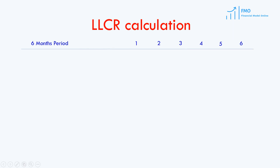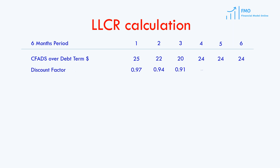Let's review how LLCR is calculated. Our timeline is a 6-month periods timeline, which is a typical timeline for project finance models at the operations stage. The first ingredient in the LLCR calculation is CFADs over the debt repayment term. Then we have to come up with a discount factor based on the debt's interest rate per period. In this simple example, we used a 3% periodic interest rate to calculate these discount factors. The next step is to discount our CFADs over the debt repayment term by multiplying CFADs by the discount factor, repeating the calculations for all periods.